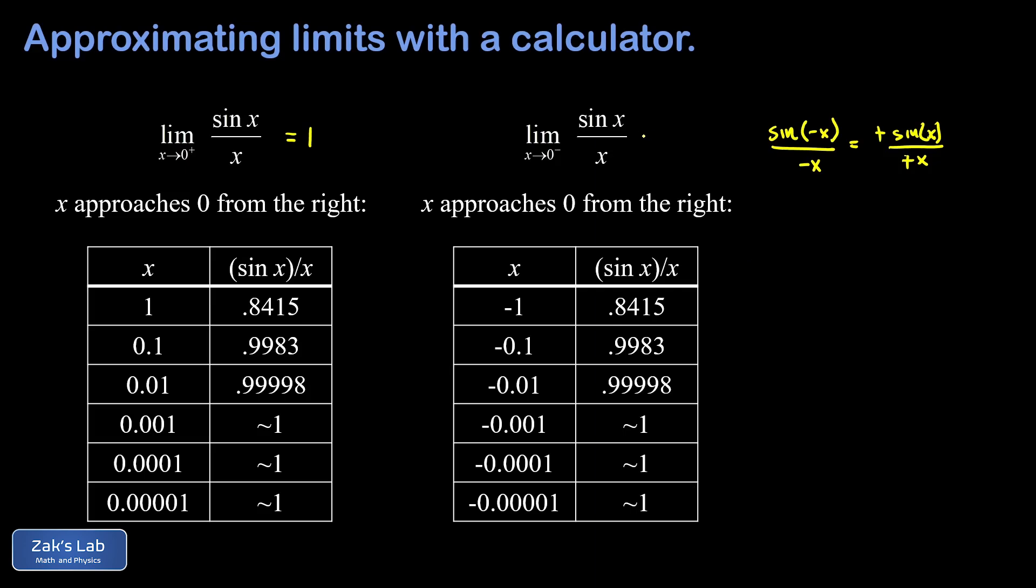And we conclude the left handed limit is also approaching one. Now with the left and right limits agreeing with each other, we can say the ordinary limit exists, and it turns out the limit as x goes to zero of sine x divided by x is equal to one. Now again, we are going to rigorously prove this limit later in the course, and I'll post a link to that video at the upper left of the end screen. And I'll see you there.